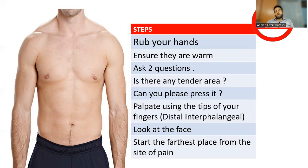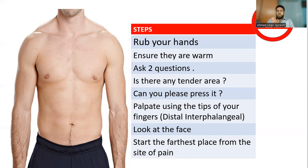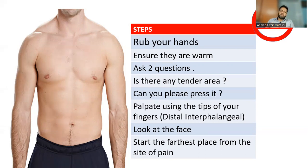Once Carnett's sign is done, begin superficial palpation. Stand back, rub your hands to warm them, and ask two questions: is there any tender area? Ask the patient to press the area themselves. This tells you how tender it is and helps you maintain rapport by assuring the patient you will not press harder than they do themselves.